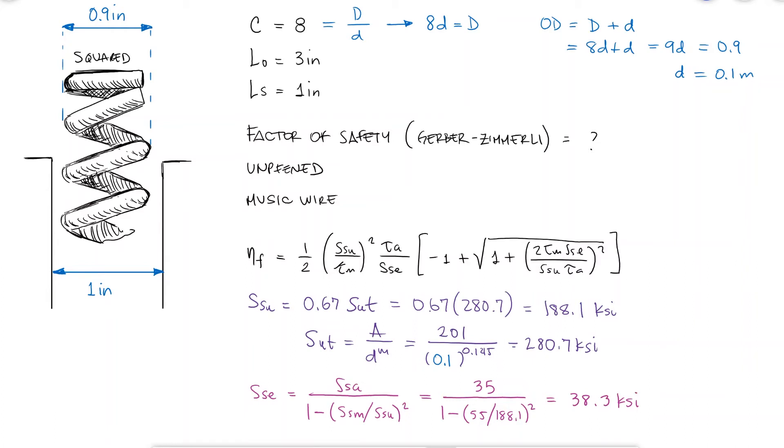It's also worth noting that in both example 1 and example 2, I'm using an unpeened spring. For a peened spring, the values of SSA and SSM would be 57.5 and 77.5 respectively.